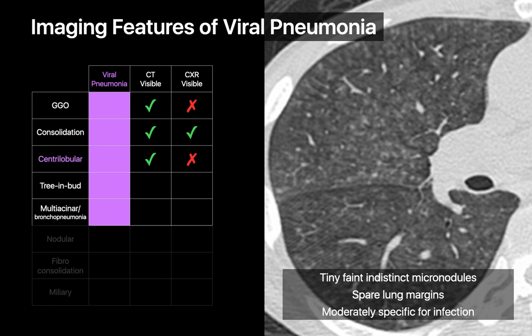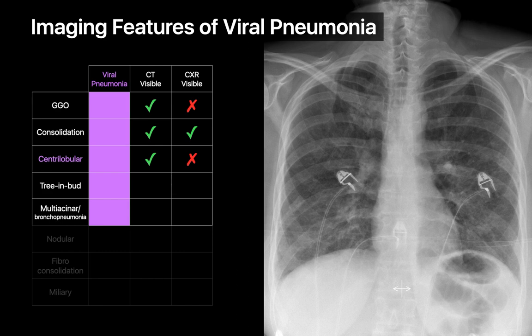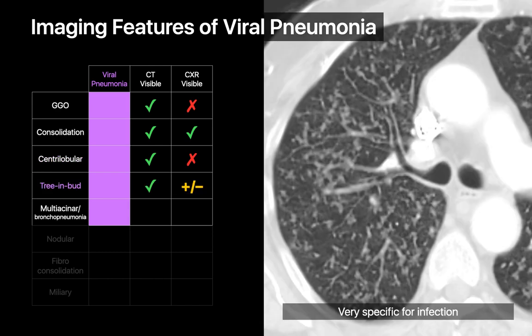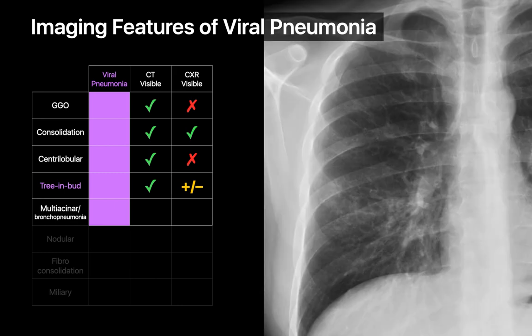Viral pneumonias can also result in a centrilobular nodular interstitial pattern, characterized by numerous tiny, faint, indistinct micronodules that will usually spare the lung margins. While centrilobular nodular interstitial patterns may be perceptible on chest CT, they are usually imperceptible on chest x-ray. Tree-and-bud nodular interstitial patterns are another way viral pneumonias may present. As the tiny nodules are generally denser and sharper in a tree-and-bud pattern, in more pronounced cases, this pattern may even be discernible on chest x-ray.